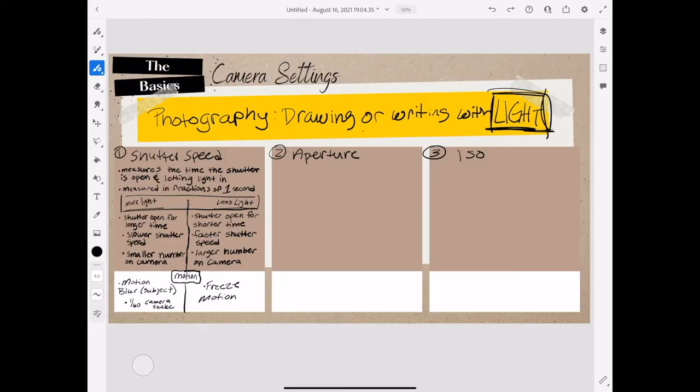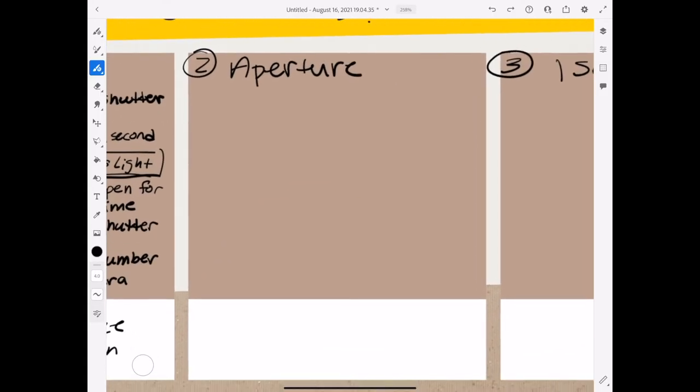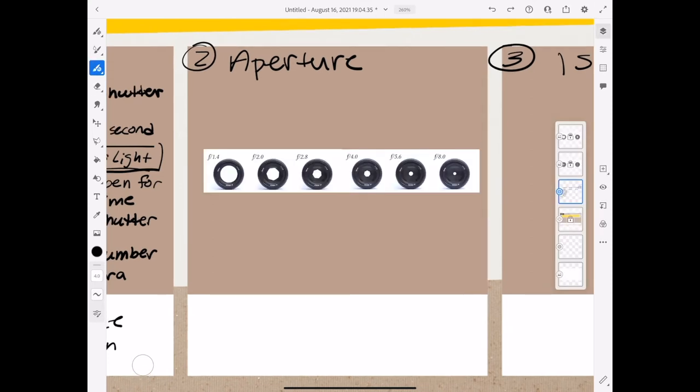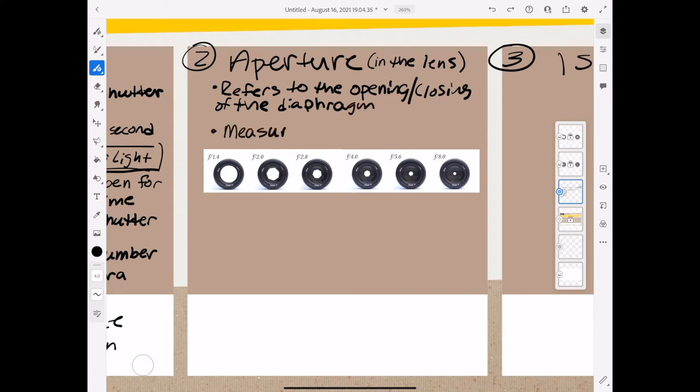Now that we have fully wrapped up shutter speed, let's talk about aperture. I'll first note that the shutter is in the camera body, and aperture refers to the opening and closing of the diaphragm in the lens. So aperture in the lens, shutter in the camera body. Aperture is measured in f-stops, which are these numbers right here.